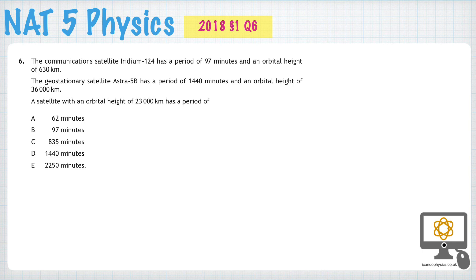We're first told that a certain satellite with a period of 97 minutes orbits at 630 kilometres, and a different satellite with a period of 1440 minutes has an orbital height of 36,000 kilometres — that's a geostationary satellite.